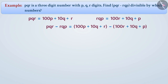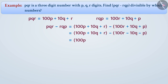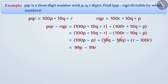From this we get pqr minus rqp equal to 100p minus p, plus 10q minus 10q, plus r minus 100r, which equals 99p minus 99r, which equals 99 times (p minus r). In this way we can say that pqr minus rqp